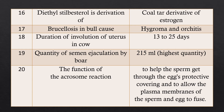Question 18: Duration of involution of the uterus in a cow. Answer: The uterus should involute from 13 to 25 days — that is normal. If it is delayed, there are chances of endometritis or pyometra. Earlier the involution, the better is the sexual health.